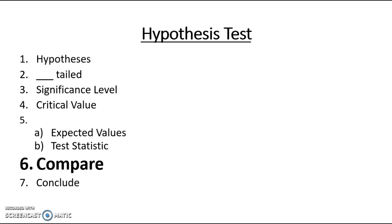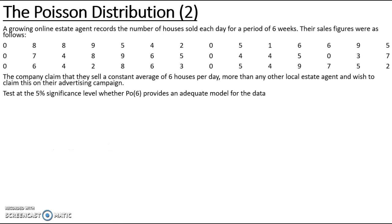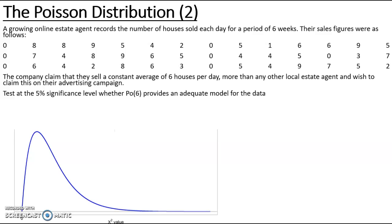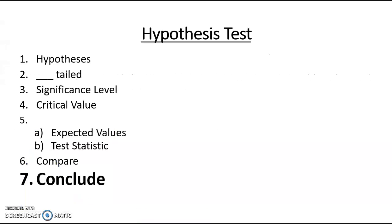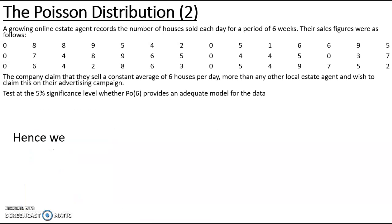I now need to compare the test statistic with the critical value. Drawing a chi-squared diagram and marking on the critical value of 11.070: anything to the left in the belly is accept H₀, and anything to the right in the tail is reject H₀. Placing my value of 9.5095 on the diagram, we can clearly see it is in the belly, and therefore we accept H₀.